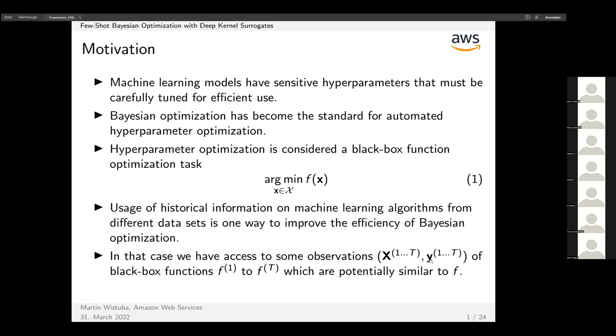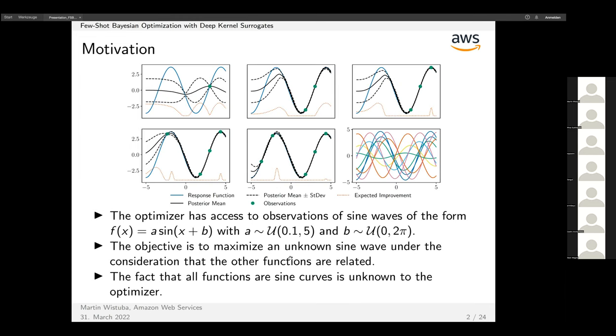That assumes that for some tasks 1 to T, we have observed for some hyperparameters x the validation scores y. For each of these tasks we basically have black-box functions f1 to ft, and now there's this new black-box function f which we want to optimize.